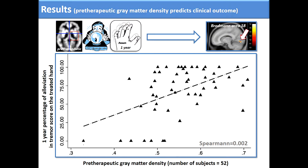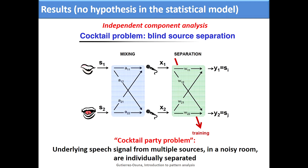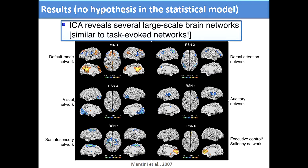Let us now discuss the resting state functional MRI changes. In a first project, we included no hypothesis in the statistical model and used independent component analysis, which is a method of separation of different networks based on the cocktail party problem — meaning that underlying speech signals from multiple sources in a noisy room are separated individually. By using these models, we could reveal large-scale brain networks demonstrated to be similar to task-based networks.